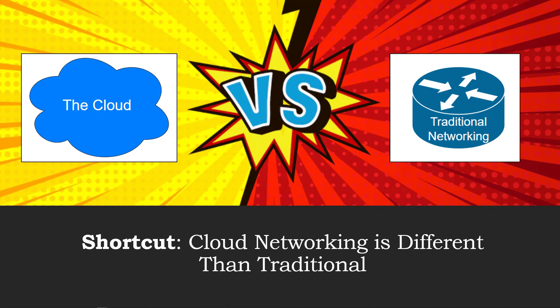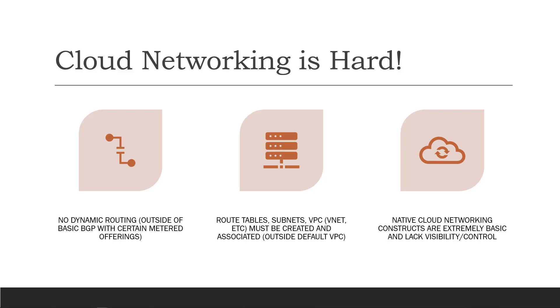So when I say something like Aviatrix gives you routing intelligence and it orchestrates routing tables, you'd probably say, well, so what? My on-prem router has been doing that for 30 years. Things like dynamic routing, subnets, route tables, VRFs — all those things exist in the enterprise and they're ubiquitous.